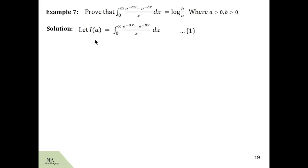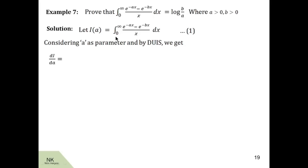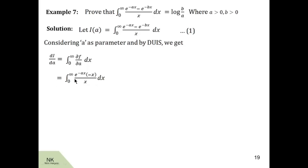Next we use the DUIS technique and differentiate this statement with respect to a. On the LHS we get di by da, and on the RHS we get the integral of the partial derivative of this integrand with respect to a, keeping x constant. We call this integrand small f. Since x is constant, 1 by x is constant. The derivative of e raised to minus ax with respect to a is e raised to minus ax into minus x. Since there is no a in the second term, its derivative is zero. So the partial derivative of f with respect to a is e raised to minus ax into minus x, upon x. This x and x will get cancelled.